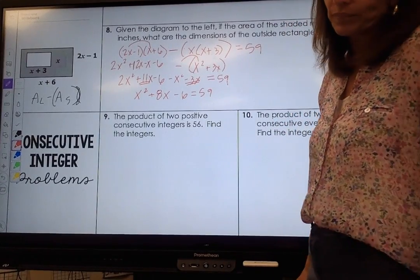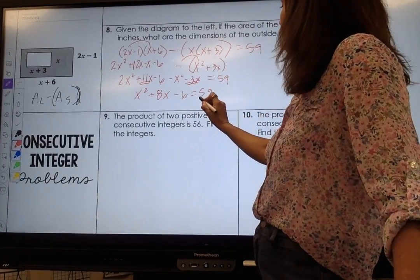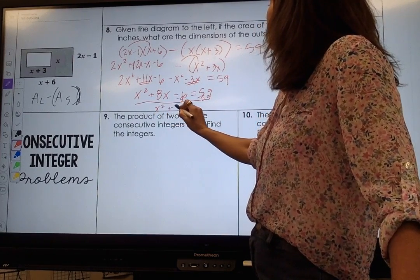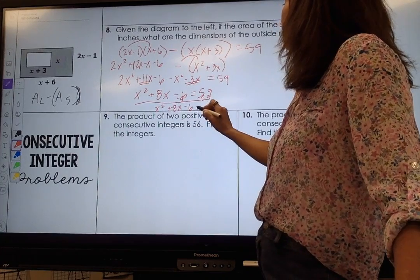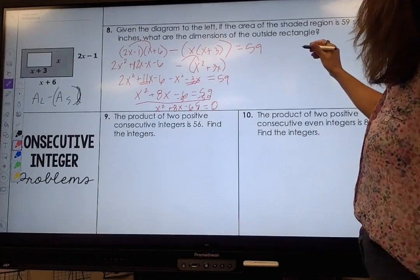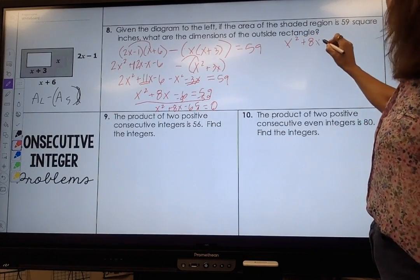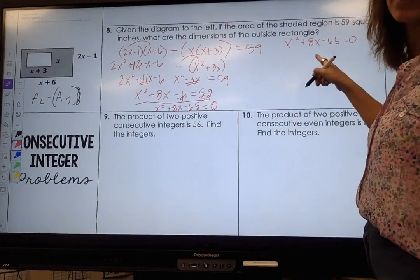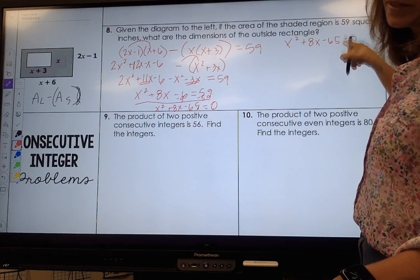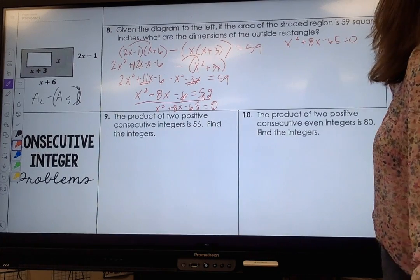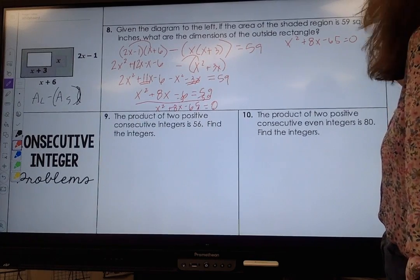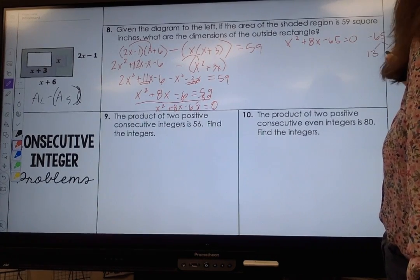I'm going to factor this guy out, so I'm going to subtract 59 on both sides: x squared plus 8x minus 65 equals 0. Here I'm looking for two numbers that multiply together to give me negative 65 but add together to give me a positive 8. So those two numbers are going to be 13 and negative 5.